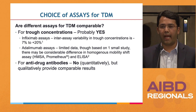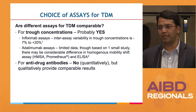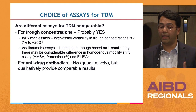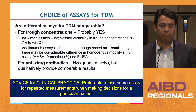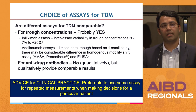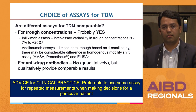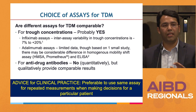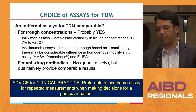The general consensus in the field is that for measuring trough concentrations, all different assays are probably comparable. On the other hand, for anti-drug antibodies, quantitatively they are not similar. Qualitatively, depending on how you interpret the results, they may provide similar guidance. My general advice is to use the same assay for repeated measurements within the same patient and be comfortable with one assay and one lab, so you know their antibody thresholds and how to respond.